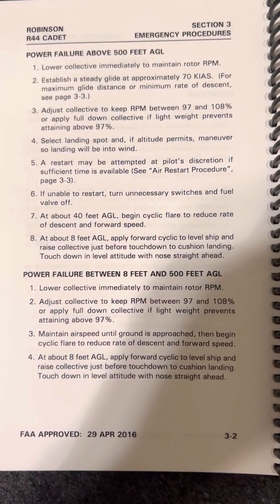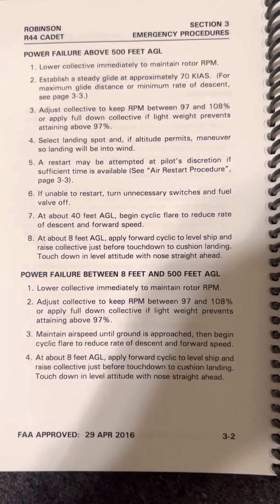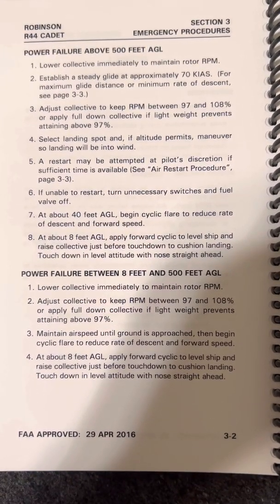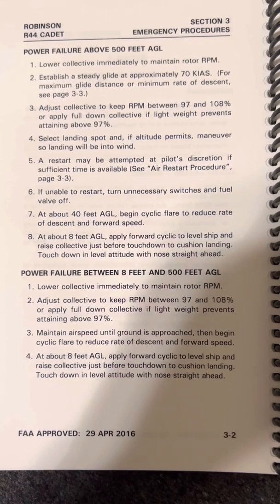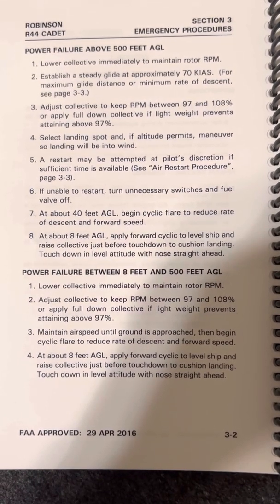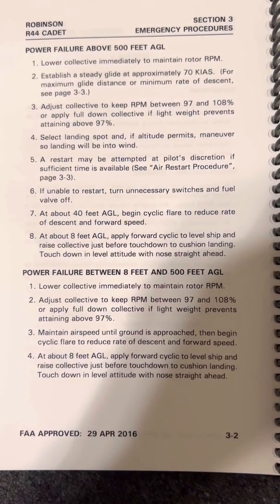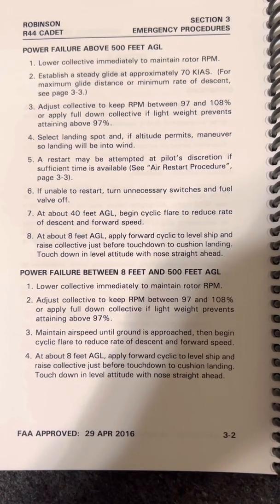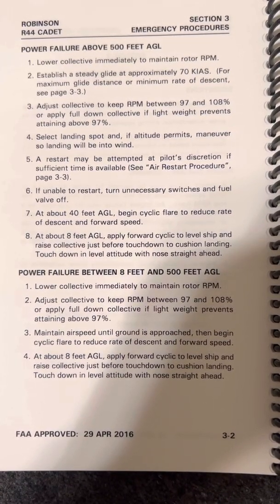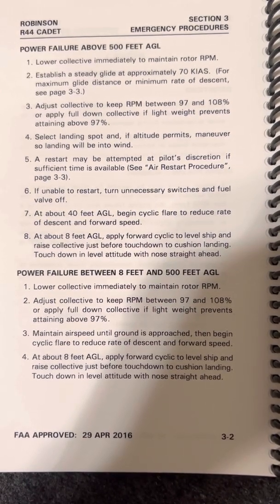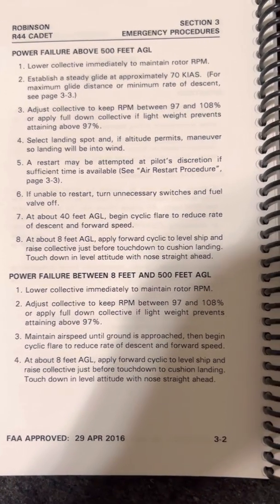3. Maintain airspeed until ground is approached, then begin cyclic flare to reduce rate of descent and forward speed. 4. At about 8 feet above ground level, apply forward cyclic to level the ship and raise collective just before touchdown to cushion landing. Touchdown in level attitude with no drift.